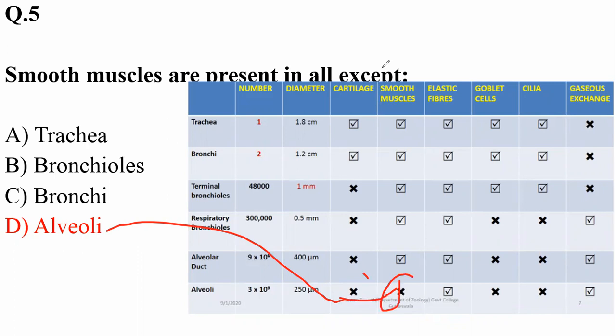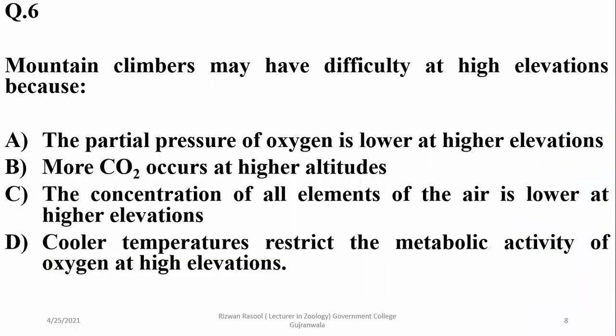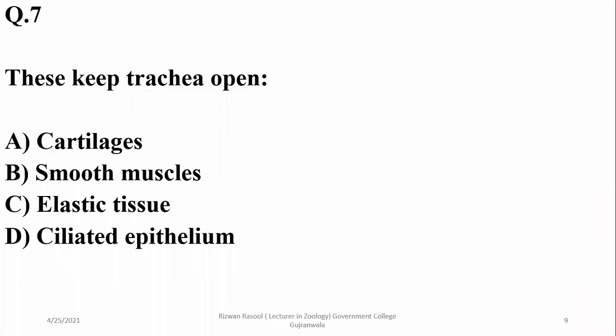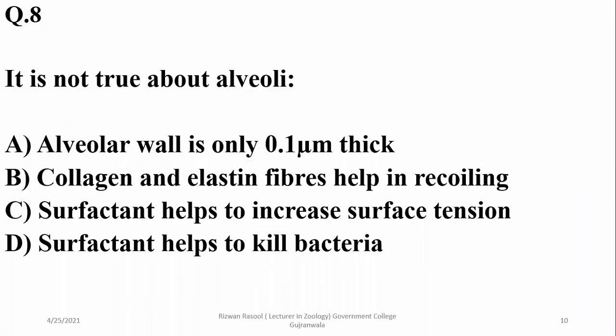Question six: mountain climbers may have difficulty at high elevations because the partial pressure of oxygen is low at higher altitude, so alpha is the correct option. Question seven: C-shaped cartilage structures keep the trachea open, so alpha is correct.